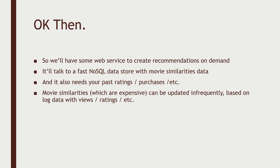So where are we at? We're going to build some web service to put these components together. We need some sort of a fast data store to retrieve the movie similarities data — that can be updated infrequently, but it needs to be available very quickly when called upon. We're also going to need fast access to past ratings and purchases — up to the second data about what a user has rated and bought, so we can use that as input for our movie recommendations.